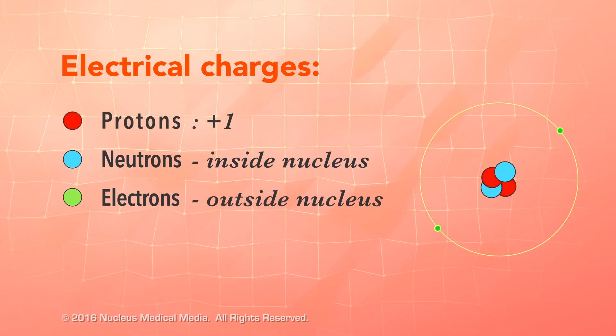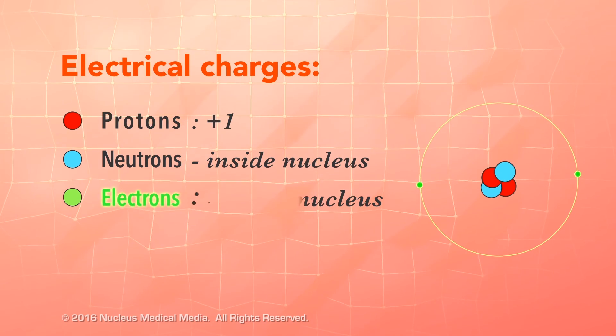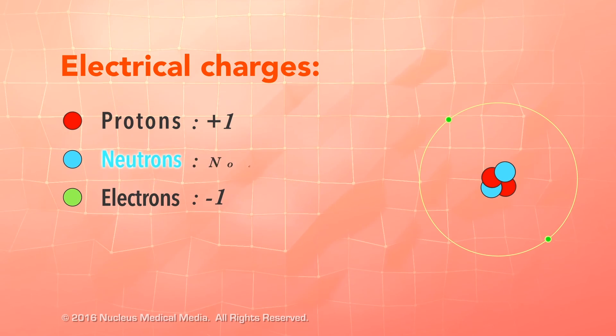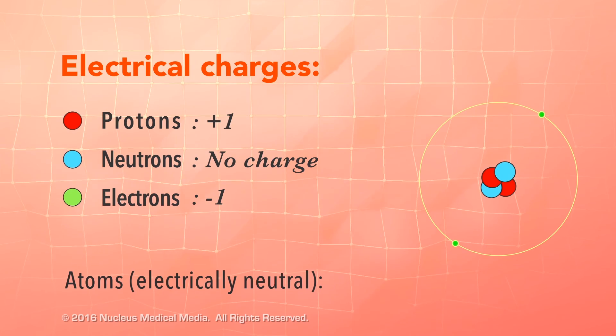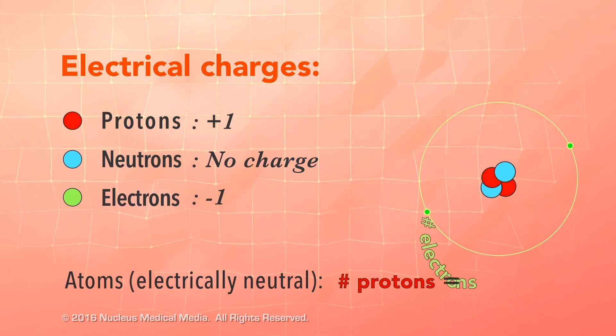Protons have a positive electrical charge, electrons have a negative electrical charge, and neutrons have no charge at all. Electrically neutral atoms have an equal number of protons and electrons.